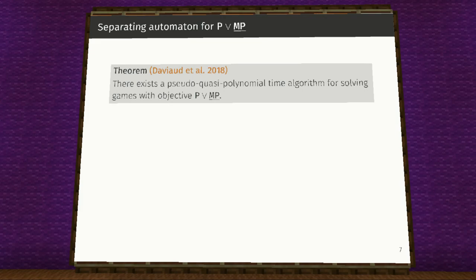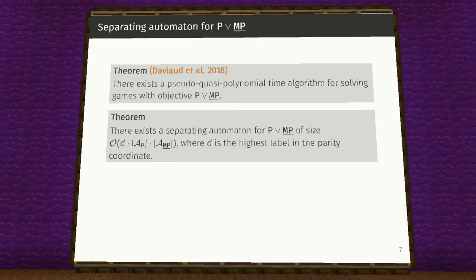Now we see the separating automata for parity or mean payoff with infimum. Deviod and others have given a pseudo quasi polynomial time algorithm for solving these games. We match the complexity of these games by constructing a separating automata of size D times size of separating automata for parity times size of separating automata for mean payoff with infimum where D is the highest level in the parity coordinate.